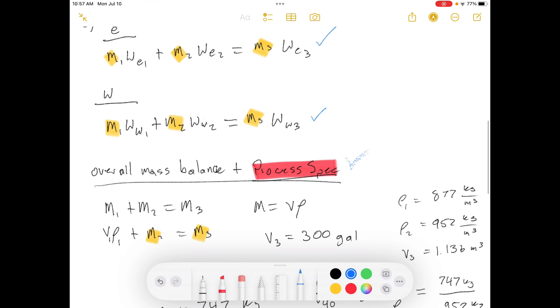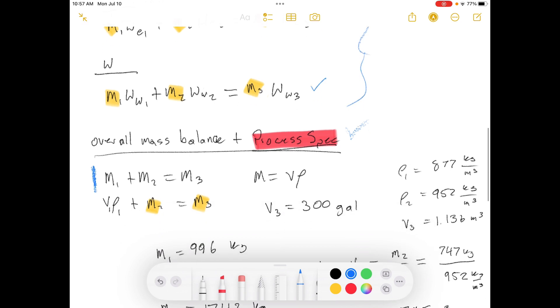So this by itself is not an independent equation from these two equations, but once I change this and add in that the mass equals the volume times the density, and I substitute that in, because we know what the volume of the first stream was, now this becomes an independent equation.